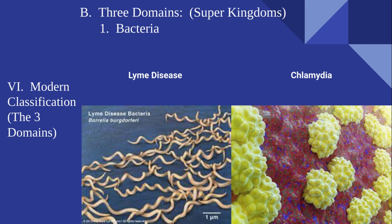Beginning with domain bacteria, two examples are Lyme disease and chlamydia. Lyme disease is carried and transmitted to livestock and humans through infected ticks. Chlamydia is a sexually transmitted disease that, because it is a bacteria, requires an antibiotic — an intervention from a doctor — to cure the infected organism, specifically human beings.